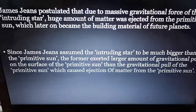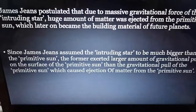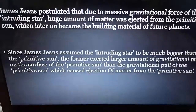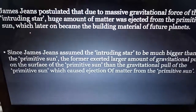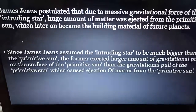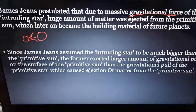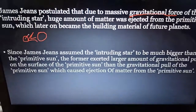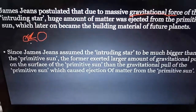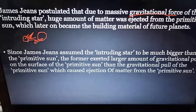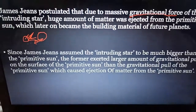Sir James Jeans postulated that due to this massive gravitational force of the intruding star, a huge amount of matter was ejected from the primitive sun, which later became the building material of the future planets. The gravitational force of the intruding star became much stronger as it came closer, attracting all matter from the primitive sun towards it, from which the future planets were formed.